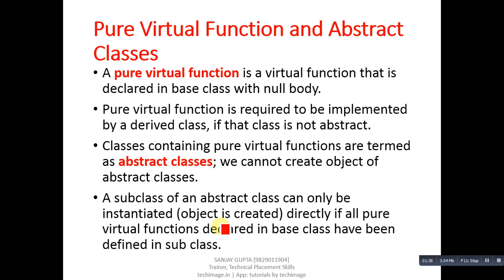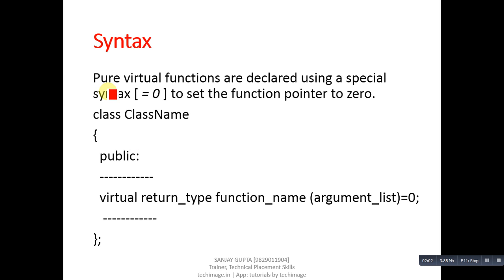A subclass of an abstract class can only be instantiated — meaning its object can be created — if all pure virtual functions declared in the base class have been defined in the subclass. So if a particular class contains certain pure virtual functions, in the derived class you have to define all the definitions.